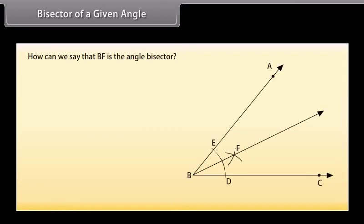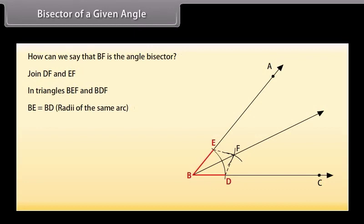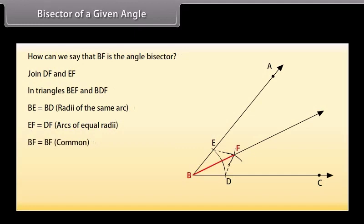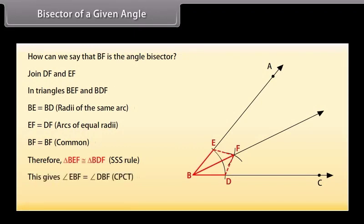How can we say that BF is the angle bisector? Let us prove this. Join DF and EF. Now in triangles BEF and BDF: BE is equal to BD, because these are the radii of the same arc; EF is equal to DF, because these are arcs of equal radii; BF is equal to BF, common. Therefore, by SSS congruence rule, triangle BEF is congruent to triangle BDF. This gives angle EBF is equal to angle DBF by CPCT. Hence, BF is the angle bisector.